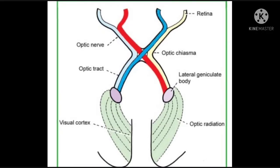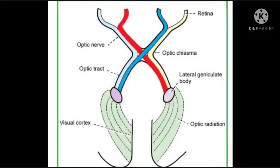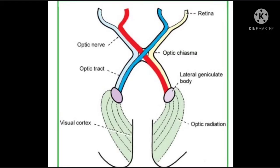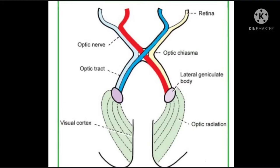Retina then transduces this image into electrical impulses using rods and cones. Yaha se retina se optic nerve nikalti hai jo blind spot se emerge hoke hypothalamus mein jate huye optic chiasma banaati hai. Yahan yeh fibers decussate karte hai, yani cross karte hai, aur optic tract banaate hai. Optic tracts se phir mid brain ke cerebral peduncles ki aur yeh fibers jate hai.